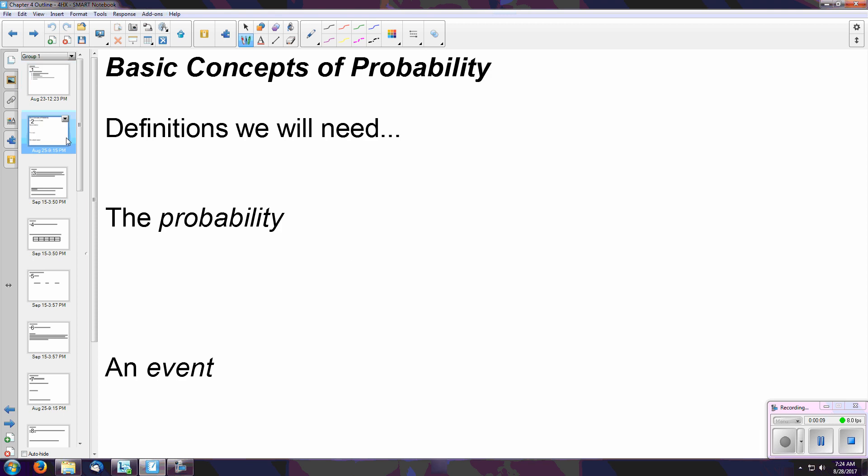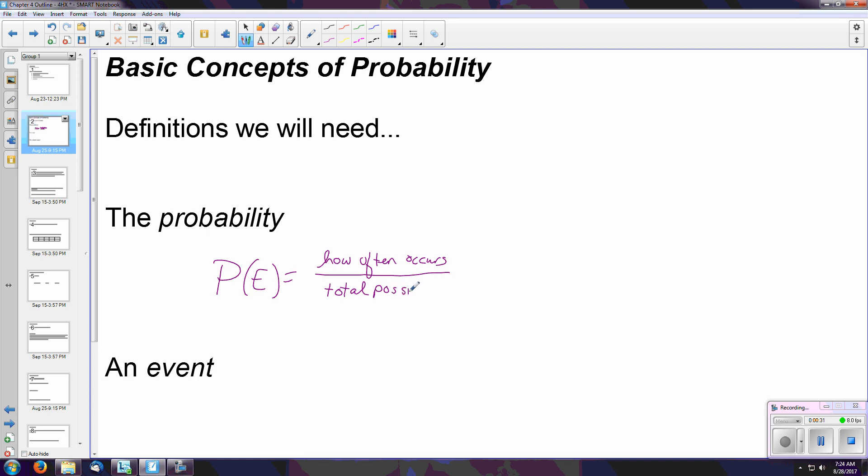A few definitions we will need to progress are the following. The probability of any given event is given by the likelihood that it will occur. So in other words, how often it occurs divided by what the total number of possibilities are.